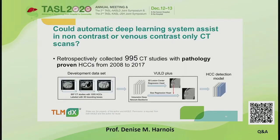They asked the question if an automatic deep learning system assisted in non-contrast and venous contrast only CT scans could improve HCC findings. Retrospectively, they collected and reviewed 995 CT studies with pathology-proven HCCs from 2008 until 2017.